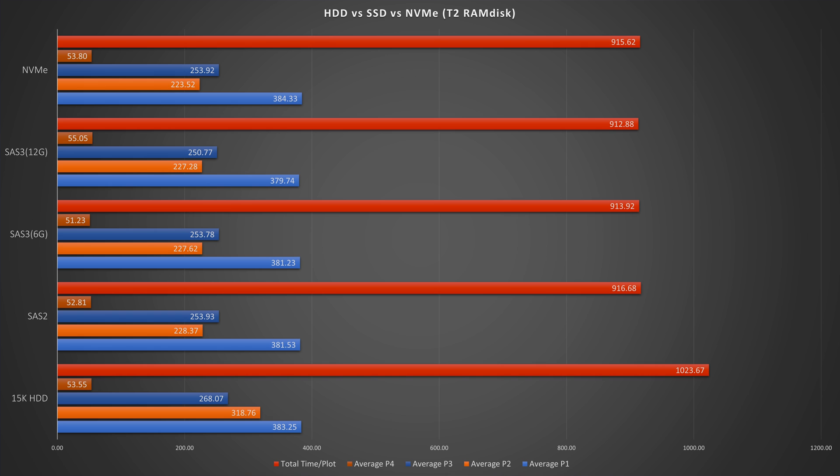The SAS 2s also last just as long as the SAS 3s. One interesting thing about this chart: for T1 storage, hard drives are almost as good as the rest, and the rest are all bunched up so tight you really can't tell them apart. That means for T1 storage you don't need the absolute best. If you're running on an older server, hard drives may actually be a really good choice, especially if you can't find SAS 2 SSDs for cheap.